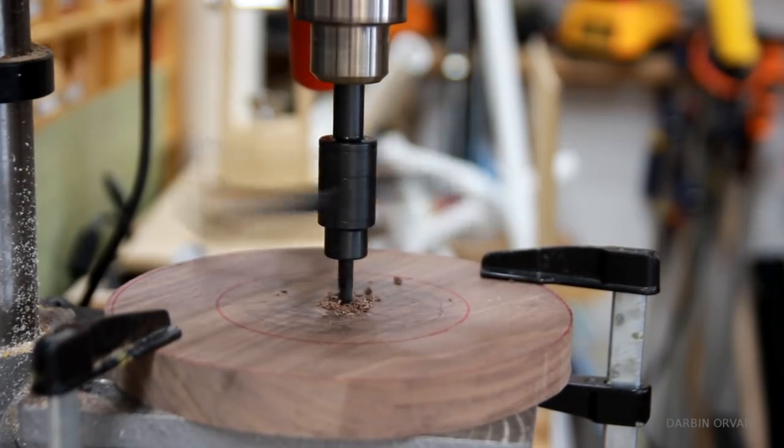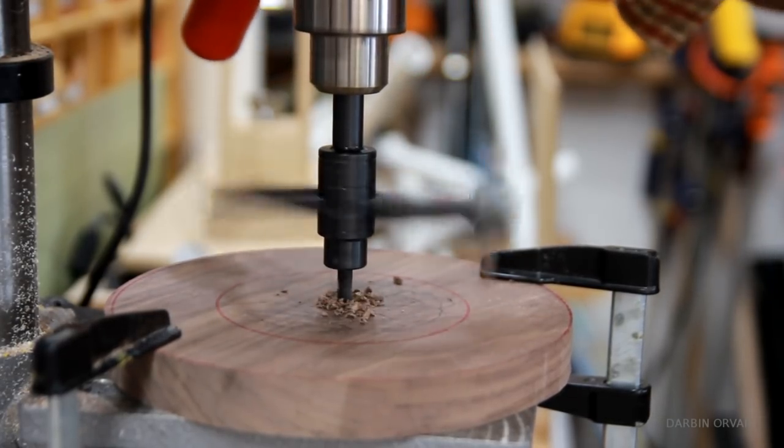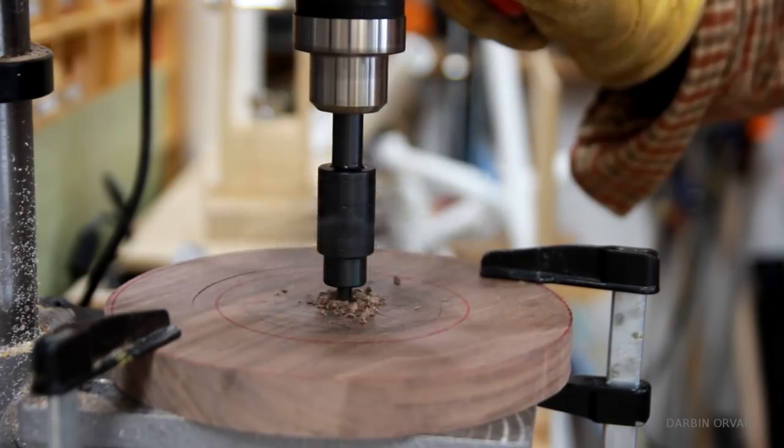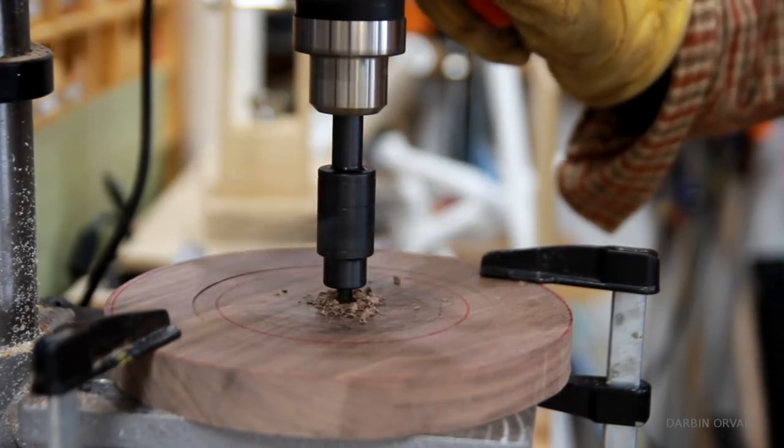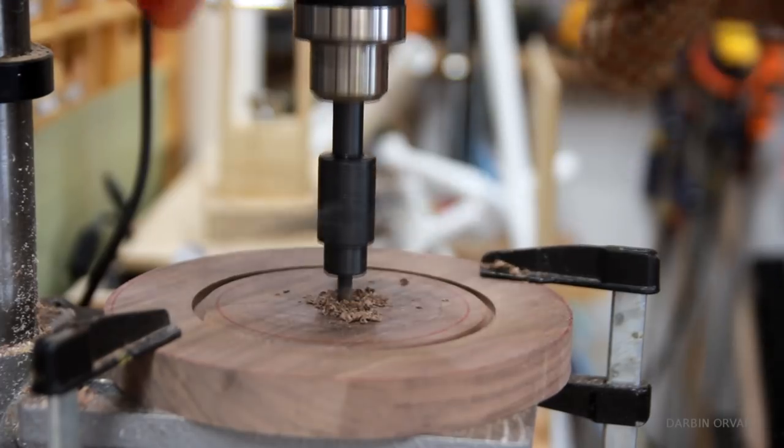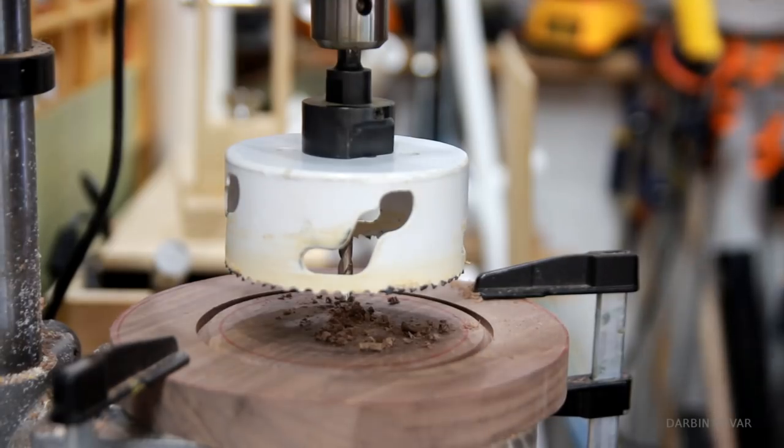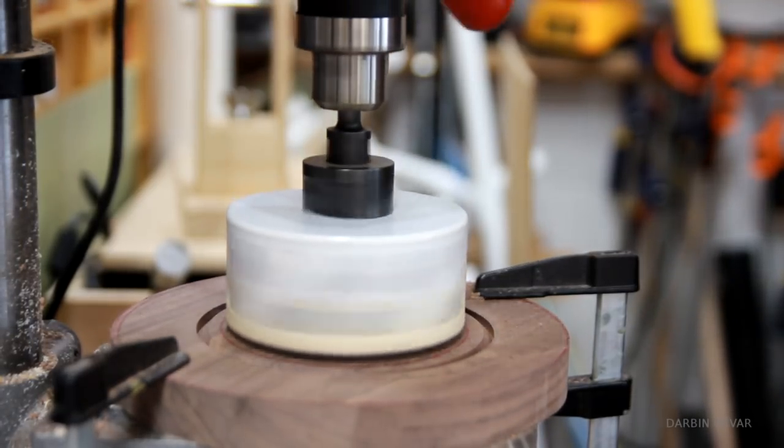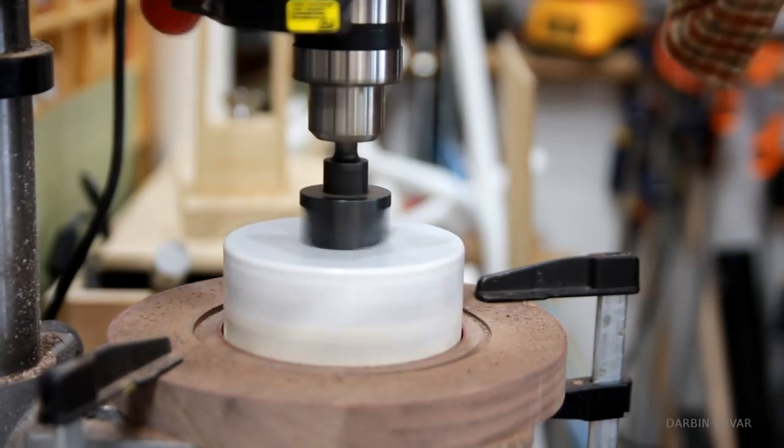Using a fly cutter here to mark out the location and the depth of the lexan insert for the inside of the top piece of the lamp. And then using the hole saw to mark the depth of the smaller inner dimension that will hold the lights.